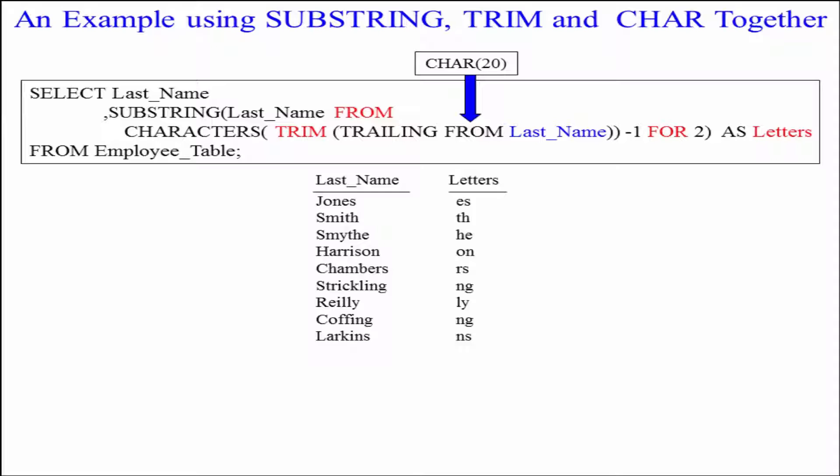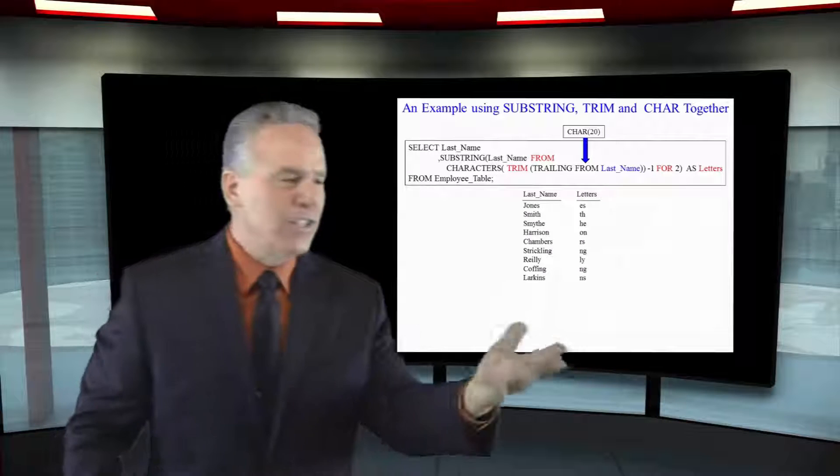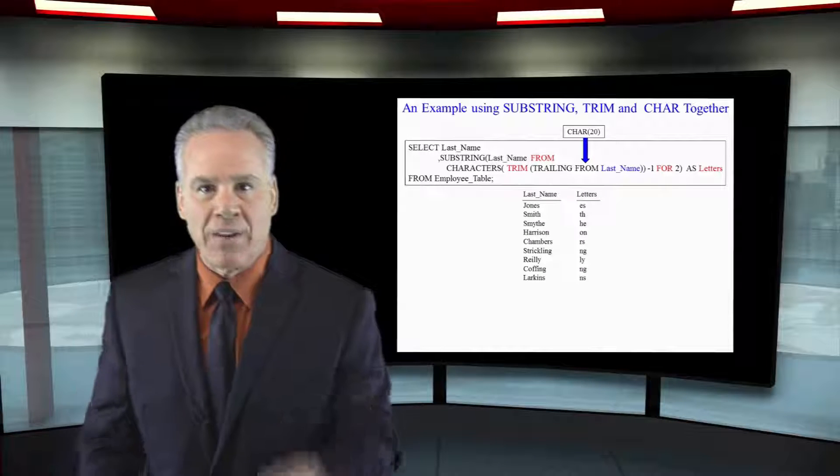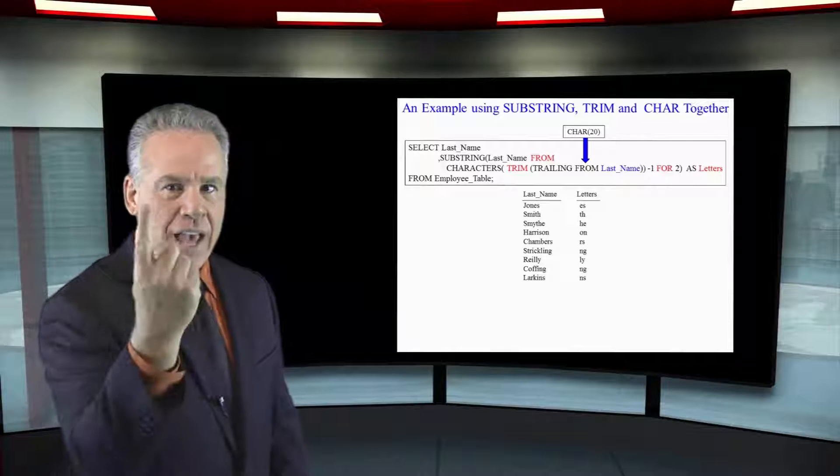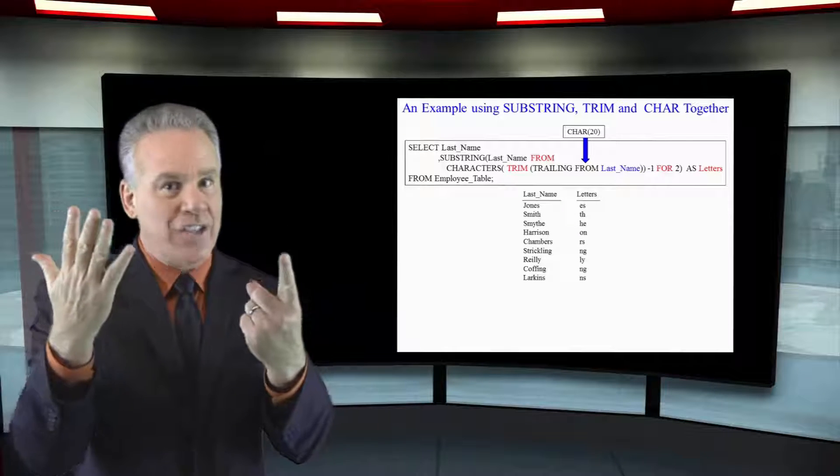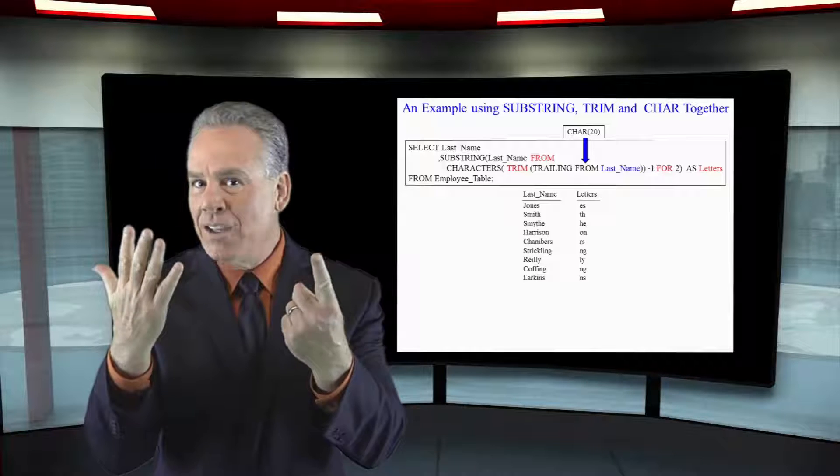Let's do one a little bit harder, Smythe. Trim Smythe, let's count the characters S M Y T H E, it's six now minus one it's five for two.